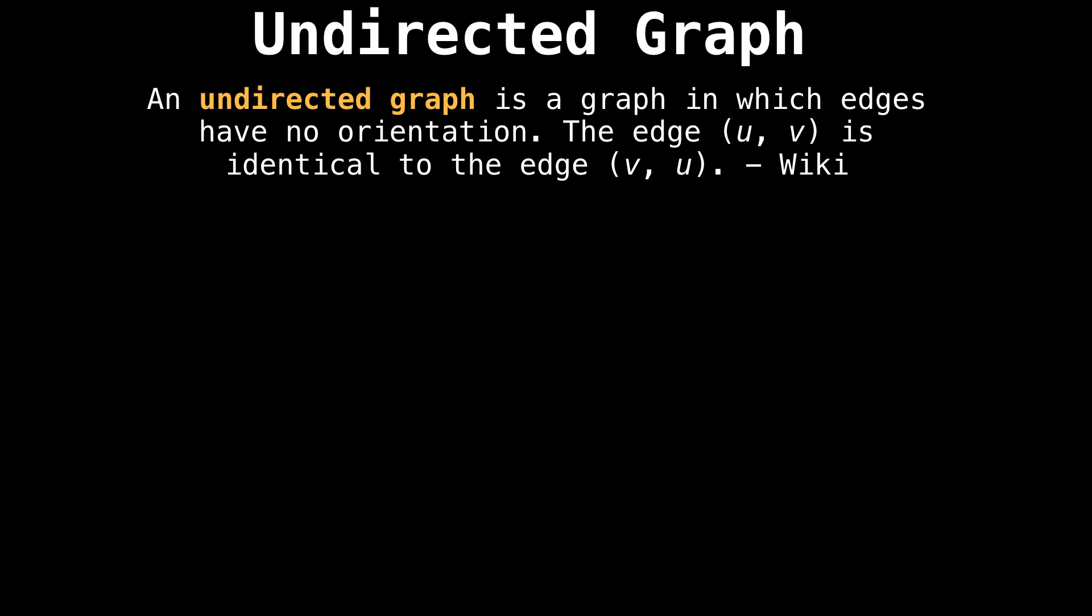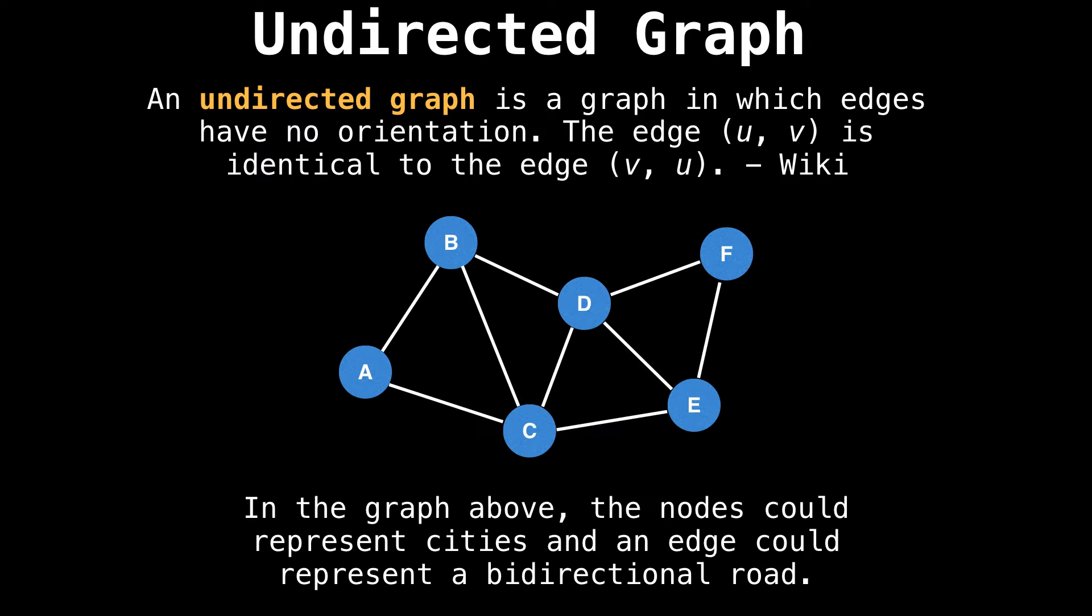That is, if there's an edge from node U to node V, it is identical to the edge from V to U. For instance, in the following graph, nodes are cities and edges represent bidirectional roads. Since if you drive from one city to another, you can always retrace your steps by driving the other way.